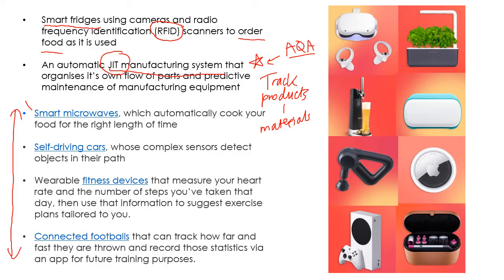Smart microwaves would automatically detect what you're cooking and cook it for the right length of time. They could use clever cameras inside the microwave that would automatically detect the weight or size of whatever you are cooking to cook it for the correct time — so you don't end up nuking your tomato soup.